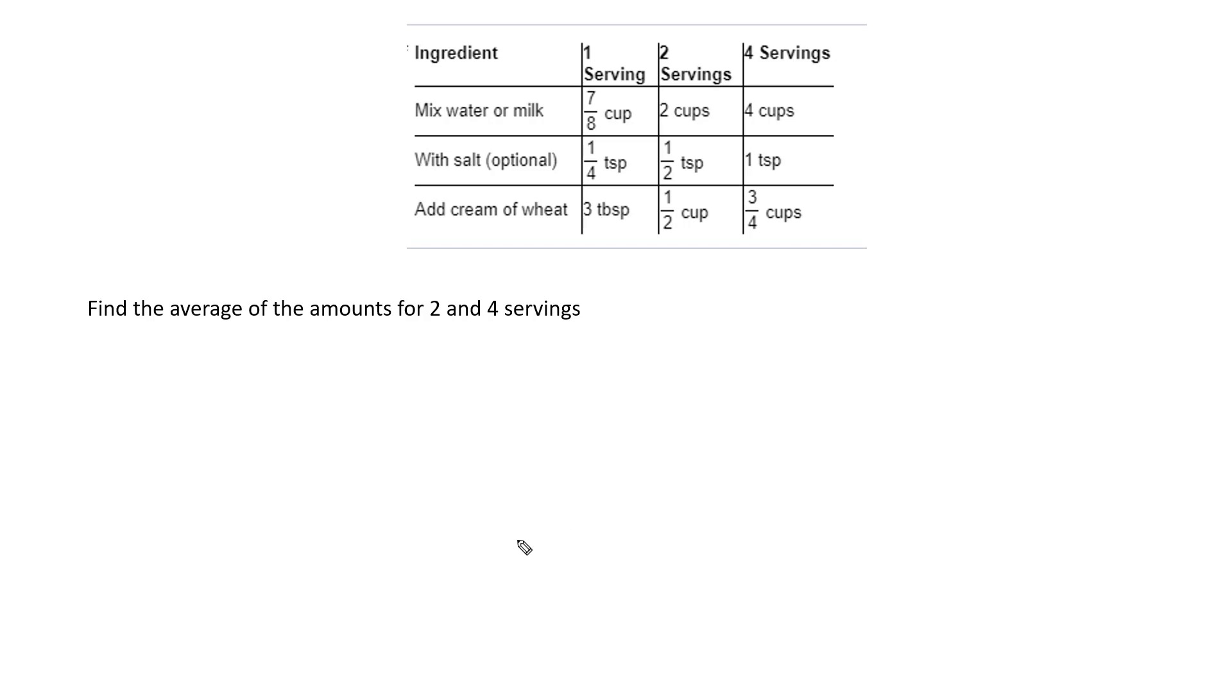Well, I know how to find an average. You add up and then divide by the number of items. If I'm doing 2 and 4 servings, that's going to be 2 items. So I will add, for the milk, I will add 2 plus 4 and then divide by 2. That's 6 over 2, and I can reduce this to 3 cups.